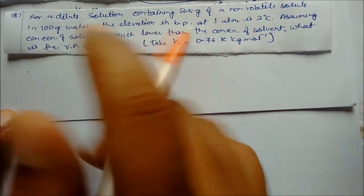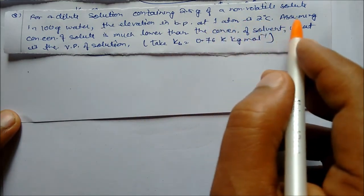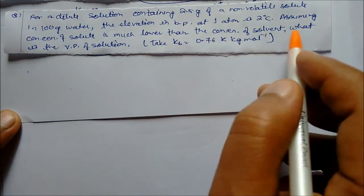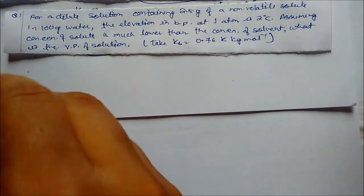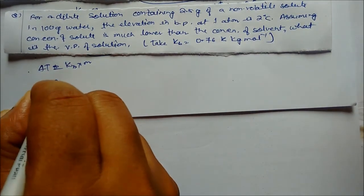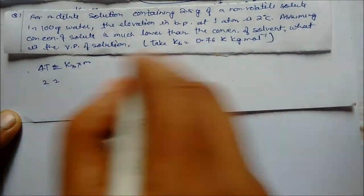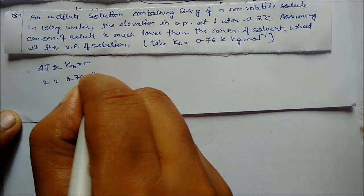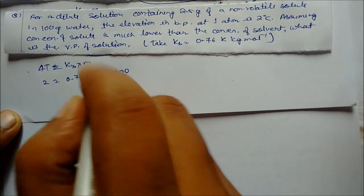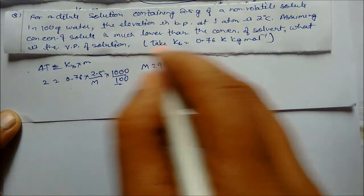Final problem: For a dilute solution containing 2.5 grams of a volatile solute in 100 grams of water, the elevation in boiling point at 1 atmosphere is 2°C. Given Kb = 0.76, using delta T = Kb × m: 2 = 0.76 × (2.5/M) × (1000/100). Solving, the molar mass M = 9.5 g/mol.